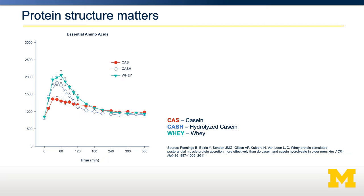For example, you may be familiar with supplements such as casein, casein hydrolysate, and whey. Because casein and whey have very different protein structures, they're digested at very different rates. Whey protein is digested quite rapidly — the amino acids from whey are released into our blood very quickly. Casein, on the other hand, is digested much more slowly. Both casein and whey have about the same amount of essential amino acids, but their structure dictates that they are digested at very different rates: casein being slow acting, whey being fast acting.